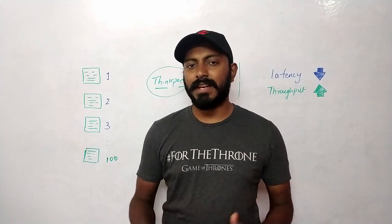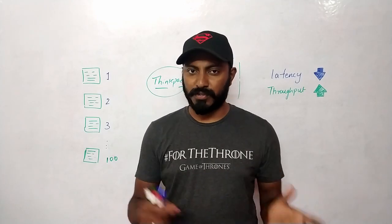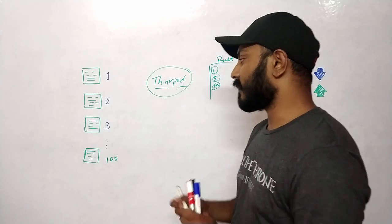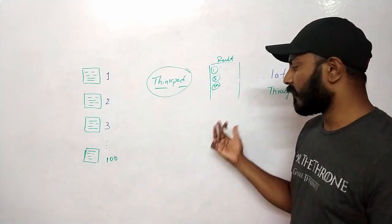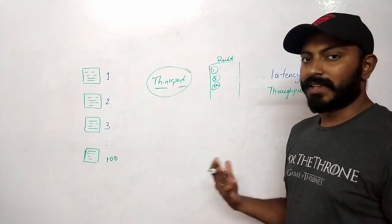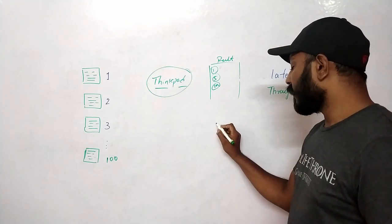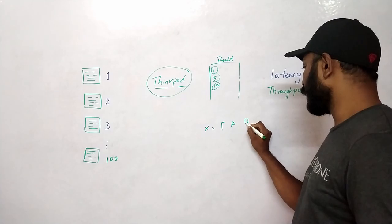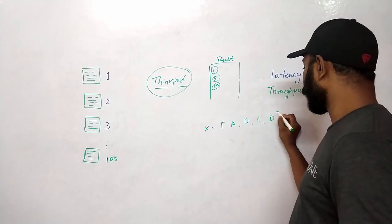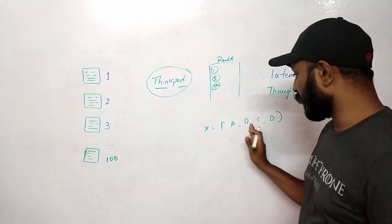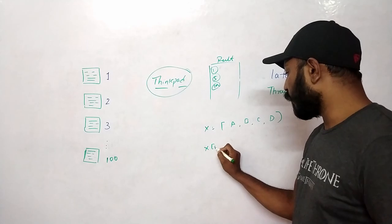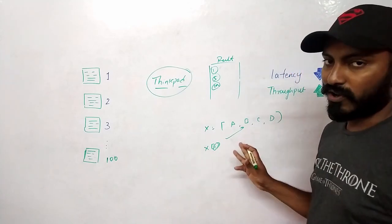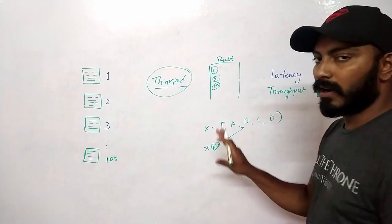An index basically helps you to identify a resource based on some identifier. A simple example: take any arrays or dictionaries in Python. If you have a list x = [a, b, c, d], then x[1] basically points to b. That's an identifier — this is a basic form of indexing.